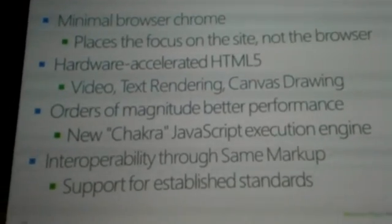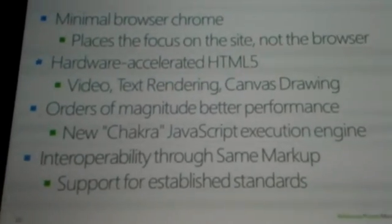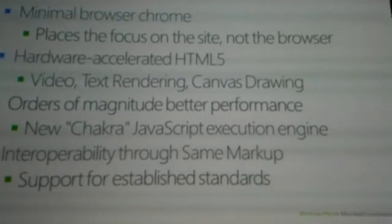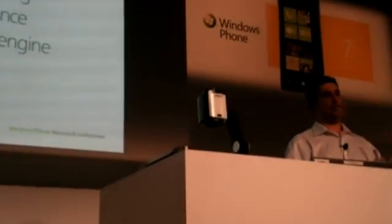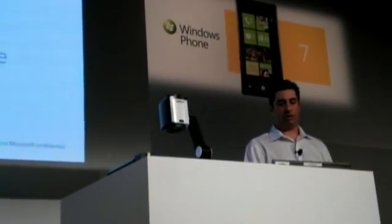Hardware accelerated HTML5 — so anything that gets rendered, whether it's video or text, the canvas stuff, all of that is accelerated. The same acceleration that we're taking advantage of on the desktop, we're doing that same kind of GPU accelerated performance work on the phone as well. So you'll have fast sites on the desktop, and you'll have fast sites on the phone — it'll work just great both places.